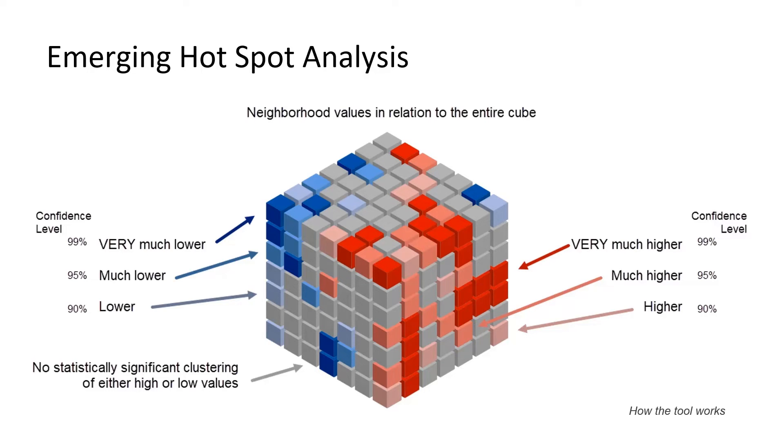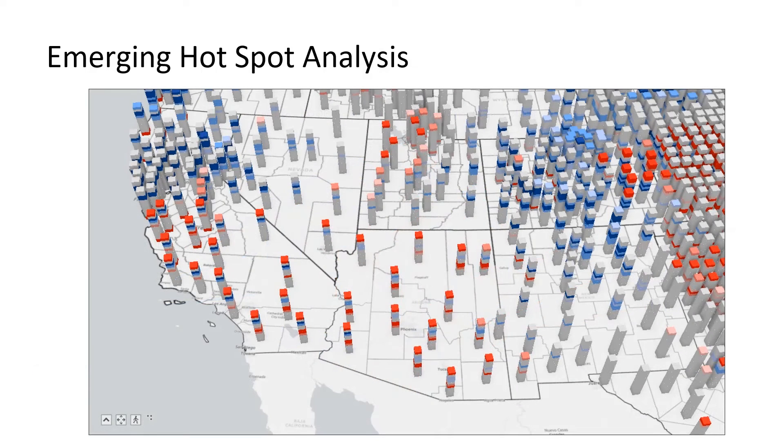Each bin is assigned a category. Remember that each column, each location in the cube actually represents a county, and the bins at the top of the column are the most recent time steps, while the bins at the bottom of the column are the oldest time steps. And if the tool stopped here, we'd sure be in trouble, because it's still really difficult to identify patterns and trends from all this data. Fortunately, the tool helps us out here.